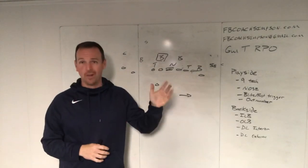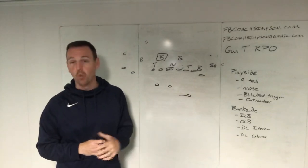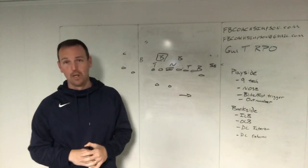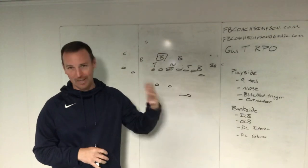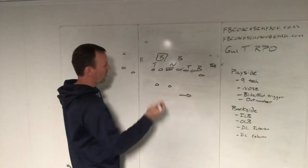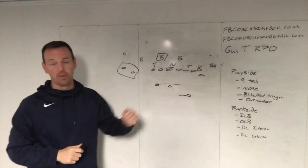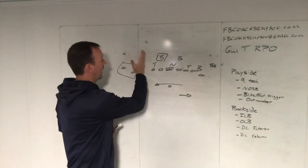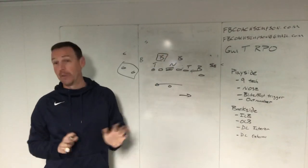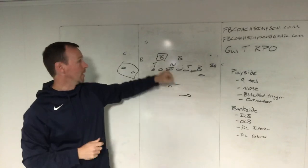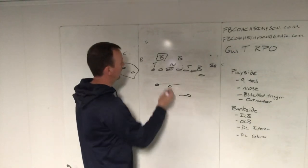We can do two different RPOs on this guy: a true run-pass option, or a run-run option with our quarterback. The first one, which the last couple of years we've called 'key,' — we'll probably have a different tag in the upcoming season, but the premise will be the same. We can run some type of fast, bubble, or quick passing game out here to occupy the backside outside linebacker and the corner — sometimes even the safety — and then we're going to read the inside linebacker on a run-run option.